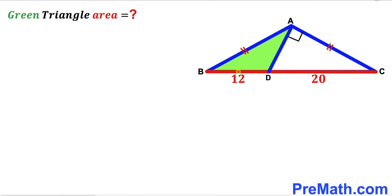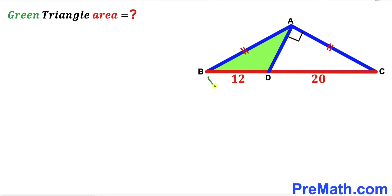Let's go ahead and get started. Here's our very first step: we know that this segment length is 12 and this segment length is 20, so therefore this whole side BC length has got to be 12 plus 20, which gives us 32 units.